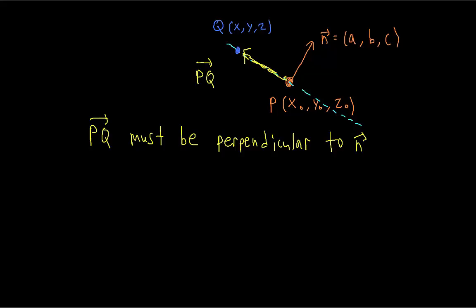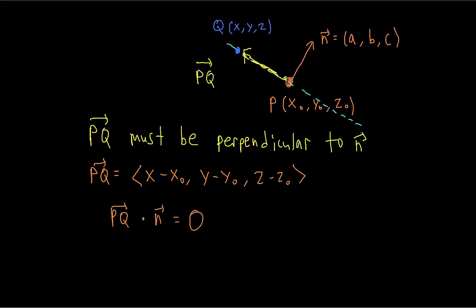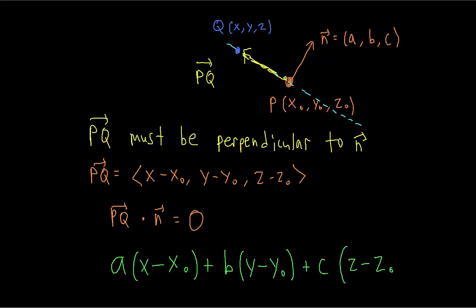First, let's write vector PQ. Since it goes from point P to point Q, you can get it by subtracting P from Q. So this vector is going to be x minus x₀, y minus y₀, and so on. If we take the dot product of vector PQ and the normal vector, it must be equal to zero. This is the equation of a plane containing the initial point (x₀, y₀, z₀) which is perpendicular to the vector (a, b, c).